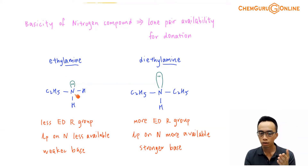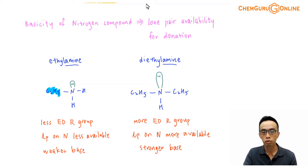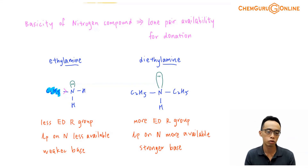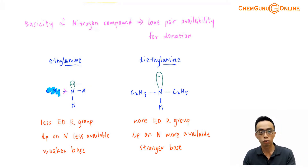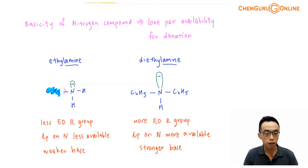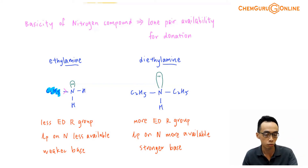Let us compare etylamine versus diethylamine. We know that the ethyl group, which is an alkyl group, is electron-donating. R groups are electron-donating, and therefore the number of R groups attached to a nitrogen will affect how electron-rich the nitrogen is, and in turn affects lone pair availability for donation. For etylamine, the nitrogen is only bonded to one R group, which pushes electrons to nitrogen, increasing electron density on nitrogen and making it more willing to donate its lone pair.